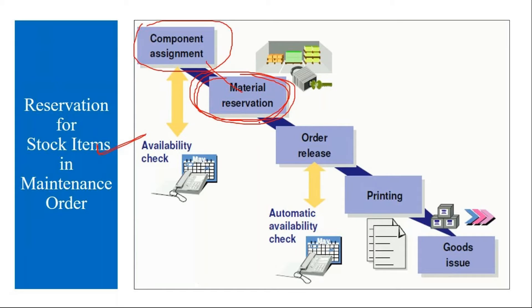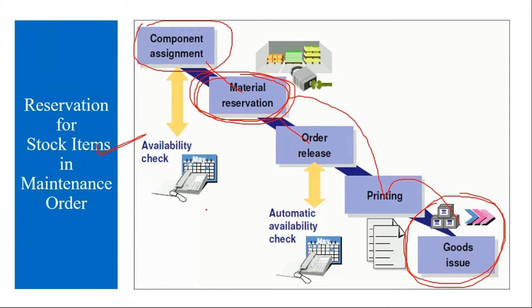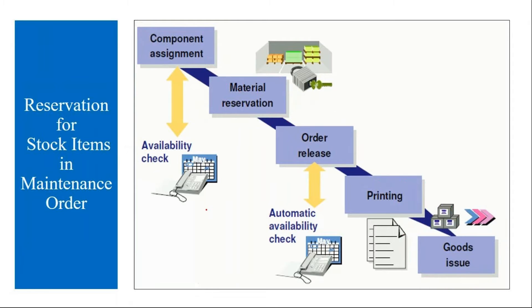When they assign a spare part component in the maintenance order, the system automatically will create a reservation for MM. After the maintenance order is released, then printing, and after that they will do the goods issue — MECO. The stock items are issued from the engineering warehouse to the maintenance technician.